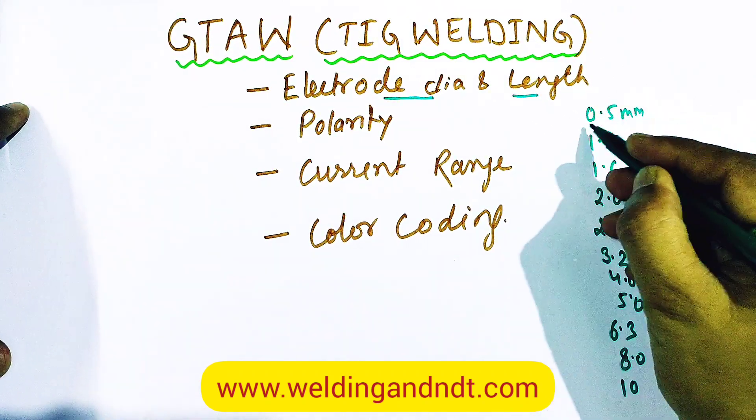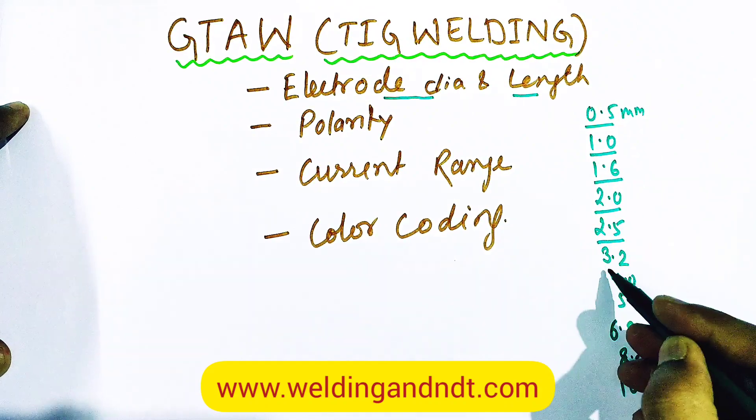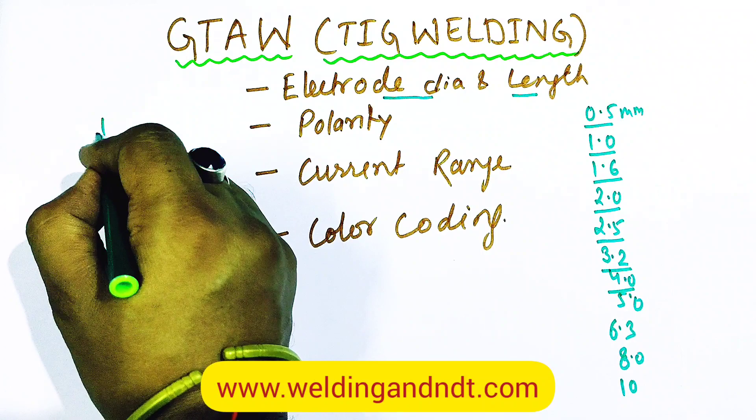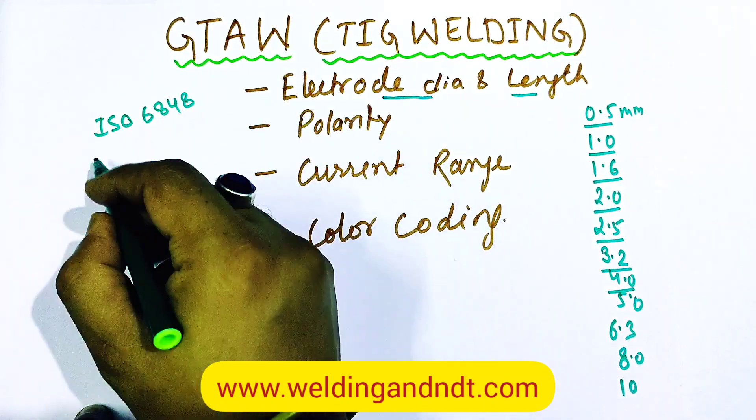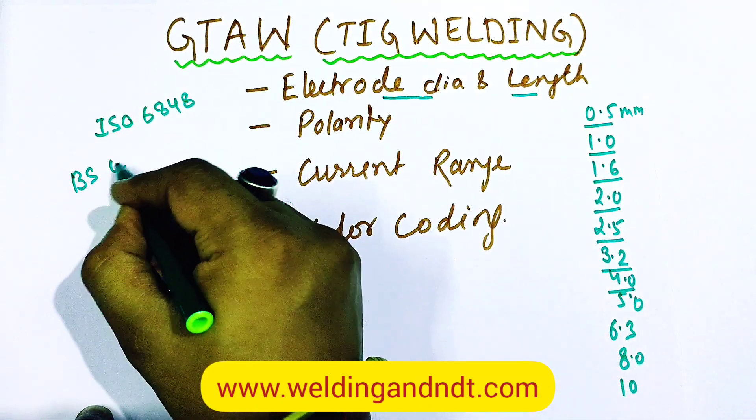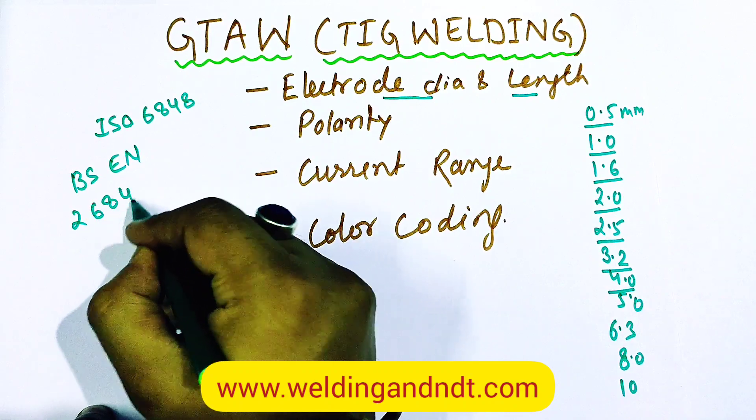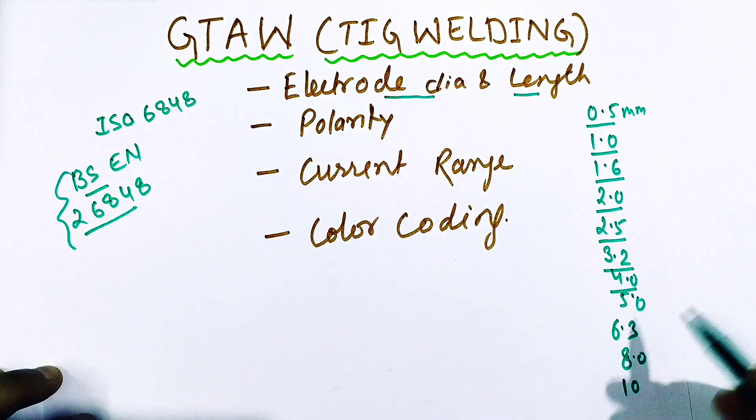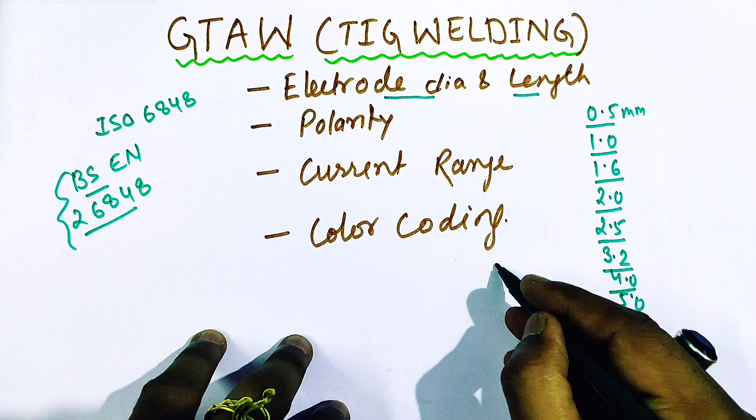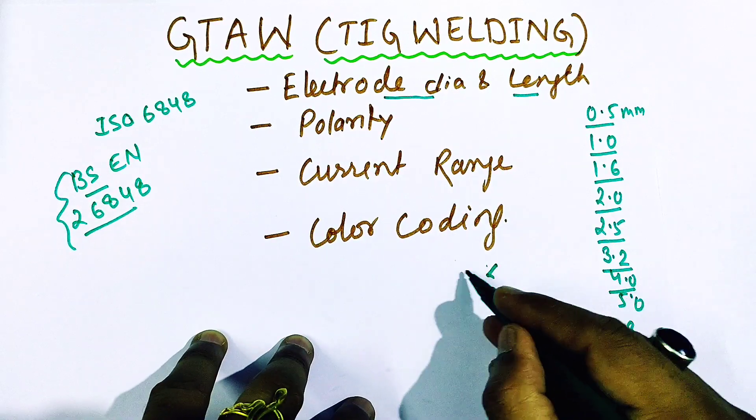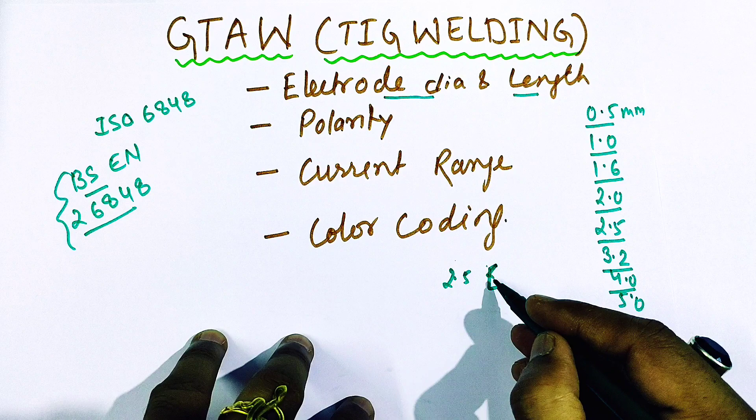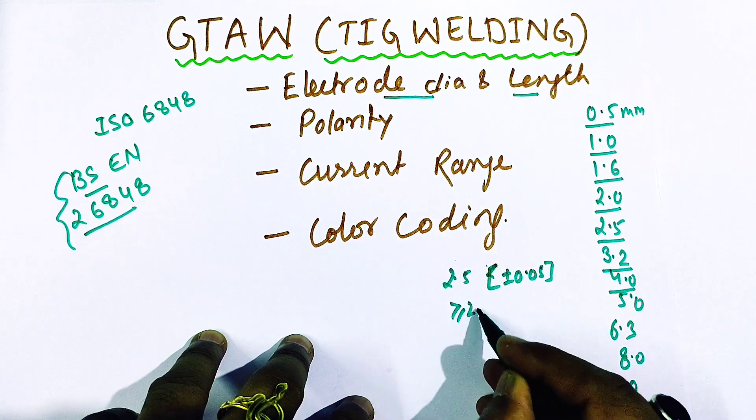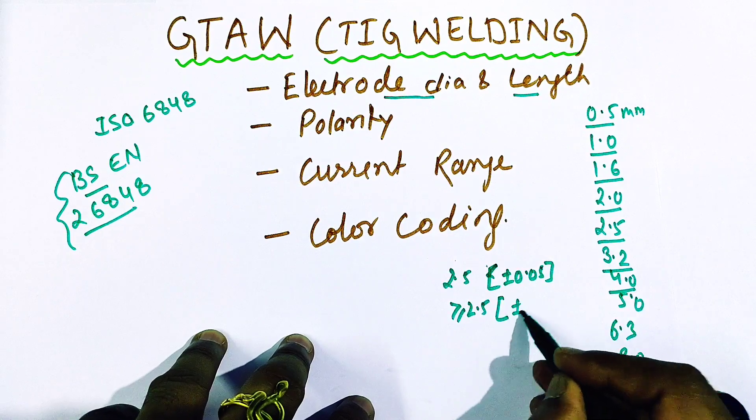These are the recommended diameters which are given in the code, and the code which I'm talking about is ISO 6848, or it is also known as BS EN 26848. So exclusively I'm talking about this code. These are the permissible electrode diameters. If we talk about the tolerance, then for electrodes below 2.5 mm the permissible tolerance is plus minus 0.05, and for electrode diameter more than or equal to 2.5 mm, the permissible diameter is plus or minus 1.0 mm.